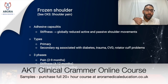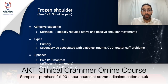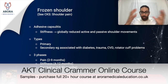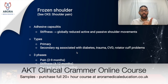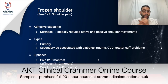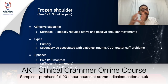Frozen shoulder, or adhesive capsulitis, involves significant stiffness around the shoulder joint leading to reduced active and passive movements. There are two types: primary, which occurs without a clear reason, and secondary, associated with diabetes, trauma, cardiovascular disease, or rotator cuff problems. There are three classic phases: the painful phase lasting around two to nine months, followed by the stiffness phase up to a year in duration, and finally the resolution phase which can last up to 42 months.